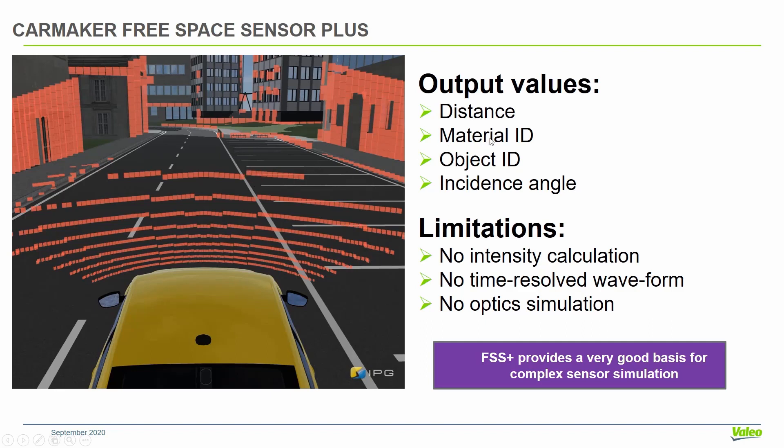The sensor is relatively performant because it runs on the GPU. And for each of these points, we can get distance, material ID, object ID, and the incidence angle or the surface normal of the objects we were hitting.